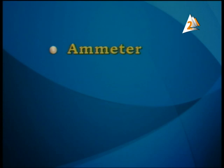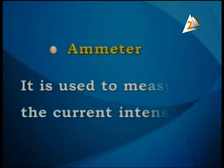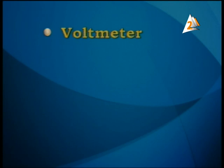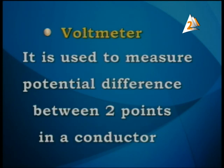The ammeter is used to measure the current intensity. And we have another one — the voltmeter. The voltmeter has a different function: it is used to measure the potential difference between two points in a conductor. So these are types of measuring devices in electricity.